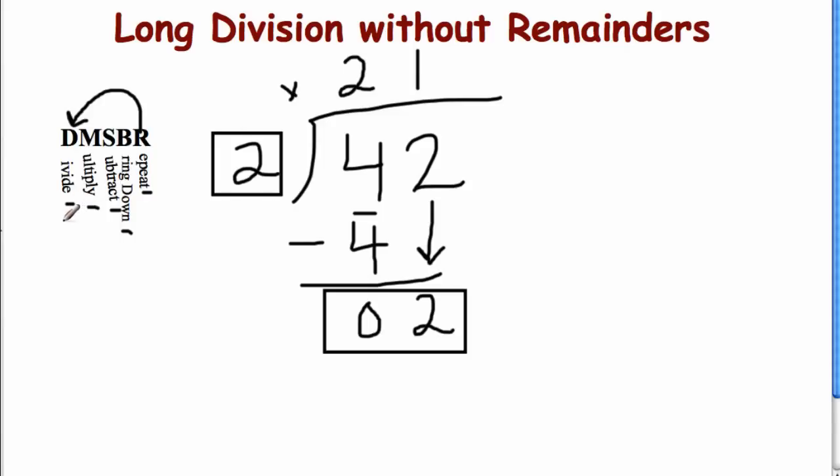All right. We're going to go through those steps again. We just divided. Now we're multiplying again. Two times one. Not two times 21. You already used the two. So remember two times one. That second number. And what is that? Two. Absolutely. Subtract again. Two minus two is zero.